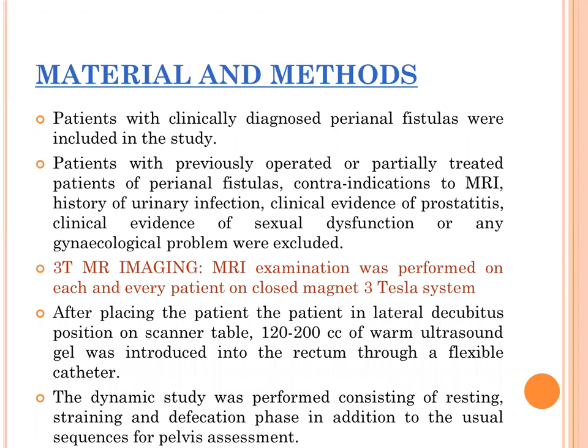Patients with clinically diagnosed perianal fistula were included in the study. Patients with previously operated or partially treated perianal fistula, contraindication to MRI, history of urinary infection, clinical evidence of prostatitis, sexual dysfunction, or any gynecological problems were excluded. We used a 3 Tesla MRI scanner. After placing the patient in the lateral decubitus position, 120 to 200 cc of warm ultrasound gel was introduced into the rectum through a flexible catheter. The dynamic study was performed consisting of resting, straining, and defecation phases in addition to the usual sequences for pelvis assessment.